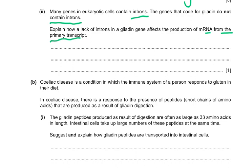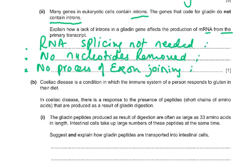The primary transcript is a coding sequence. No nucleotides are removed from the primary transcript and no process of exon joining — no introns to remove. You cannot do alternative splicing, and only other post-transcriptional processing occurs. From the DNA we usually get a pre-mRNA and then mRNA, but here we get the mRNA directly because there are no introns. RNA splicing is not needed, no nucleotides removed, no process of exon joining.